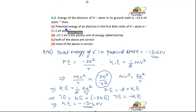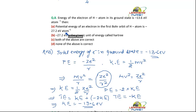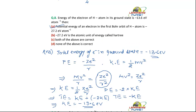The first option states: the potential energy of an electron in the first Bohr orbit of hydrogen atom is 27.2 electron volts per atom. This is correct. The next option states that minus 27.2 electron volts is the atomic unit of energy called Hartree - this is also correct. So the right answer is that both of the above are correct.